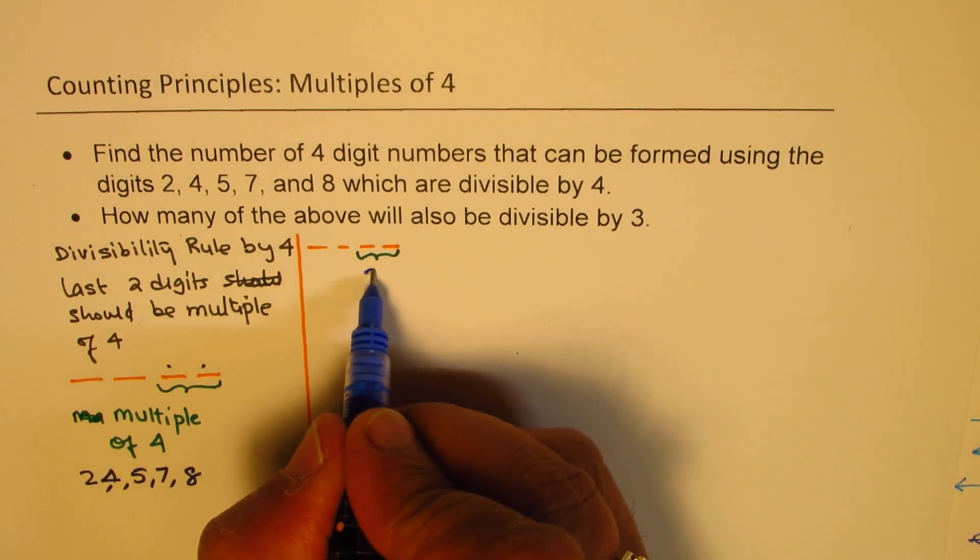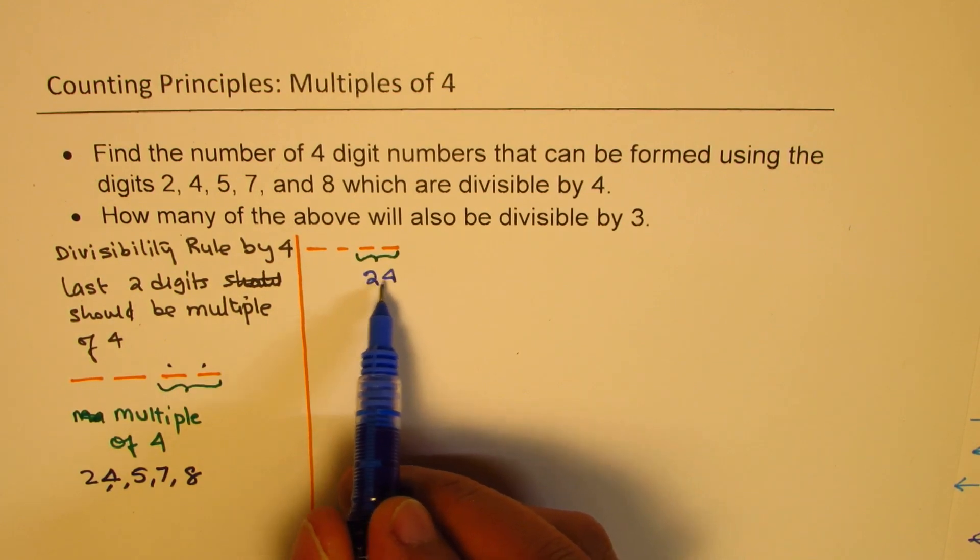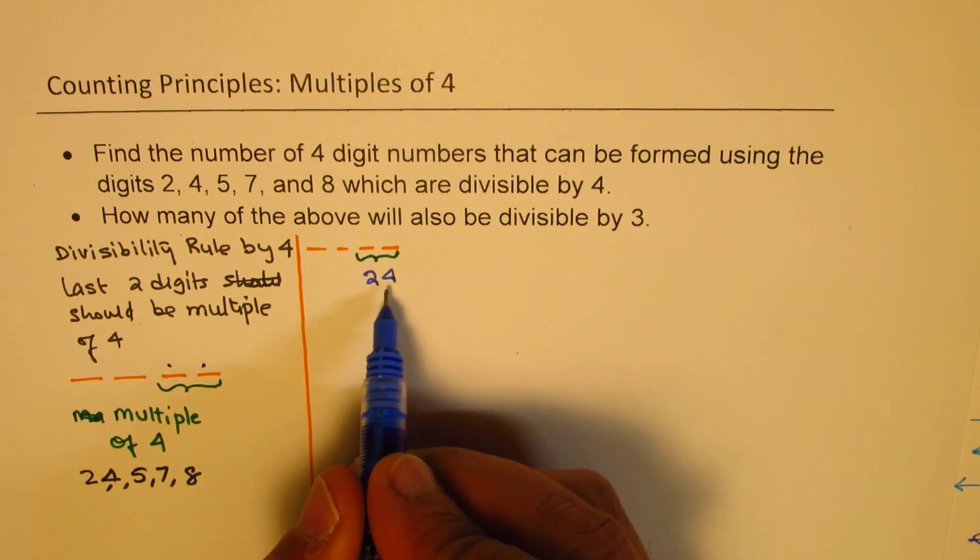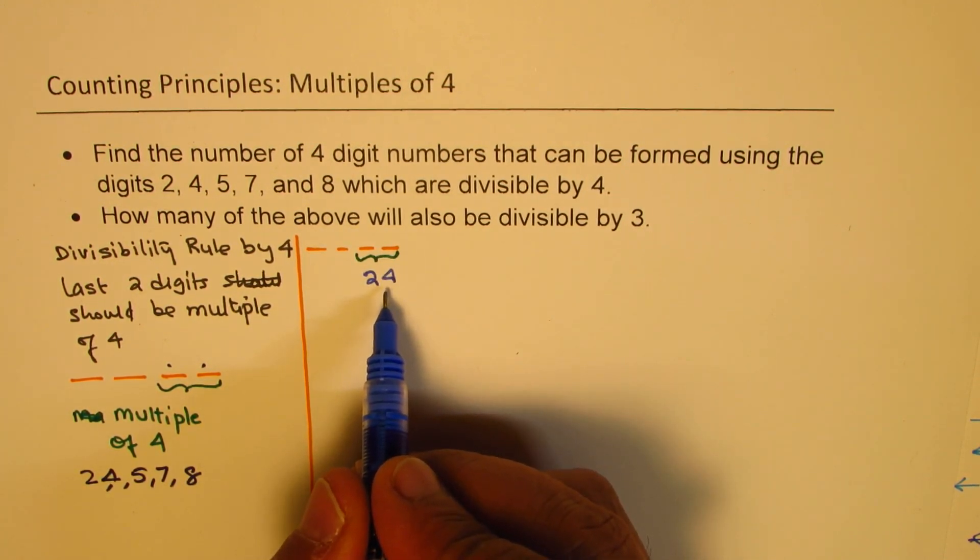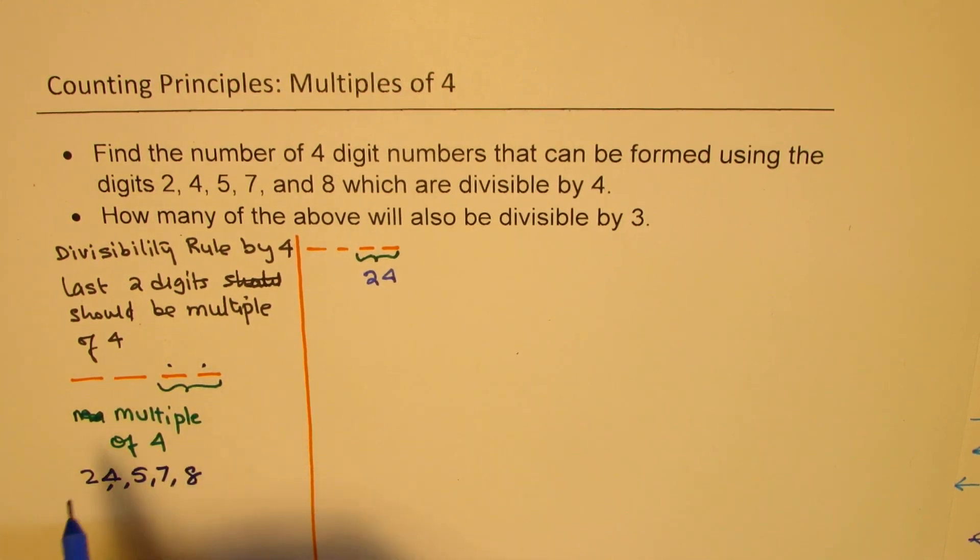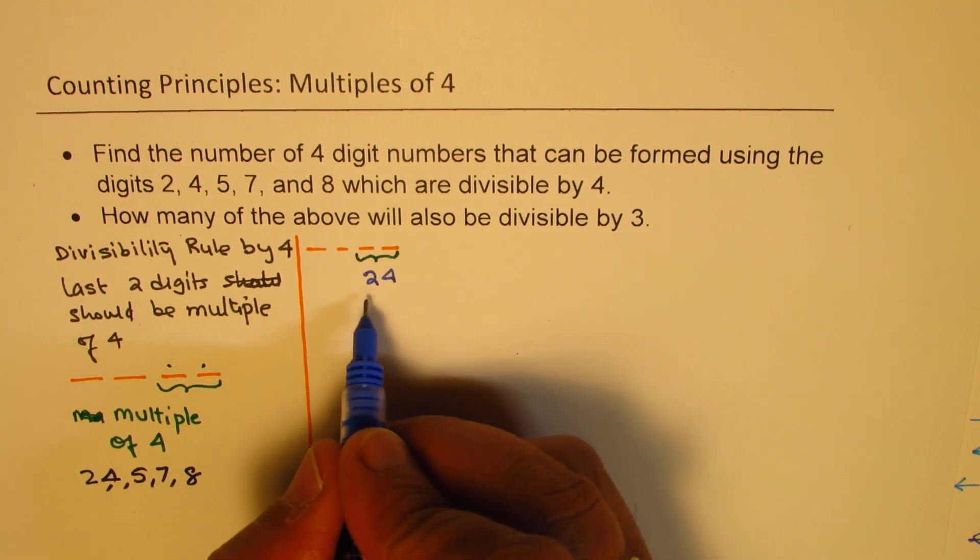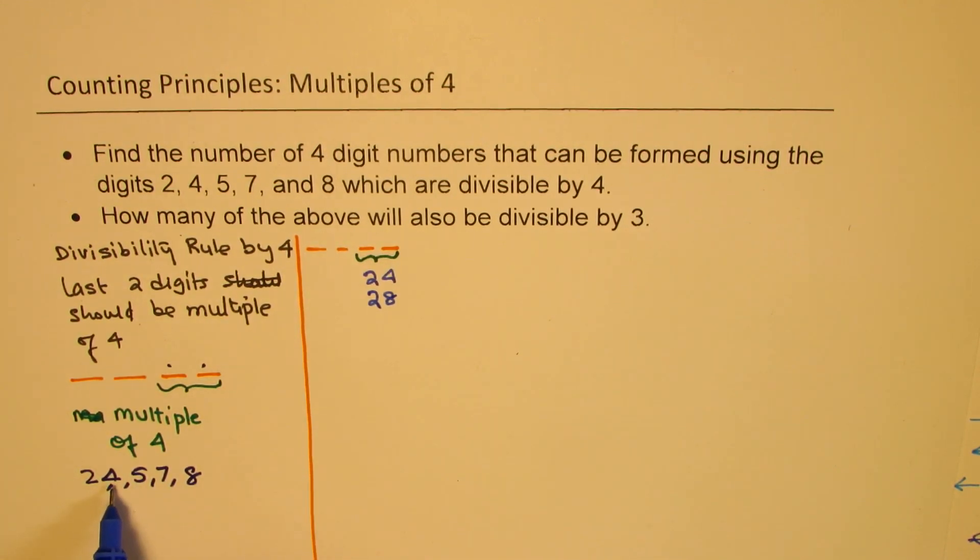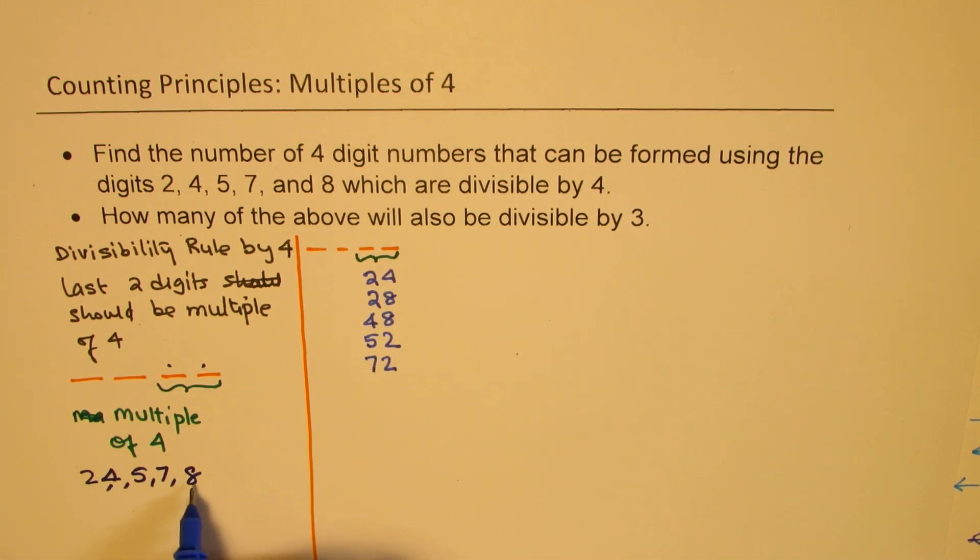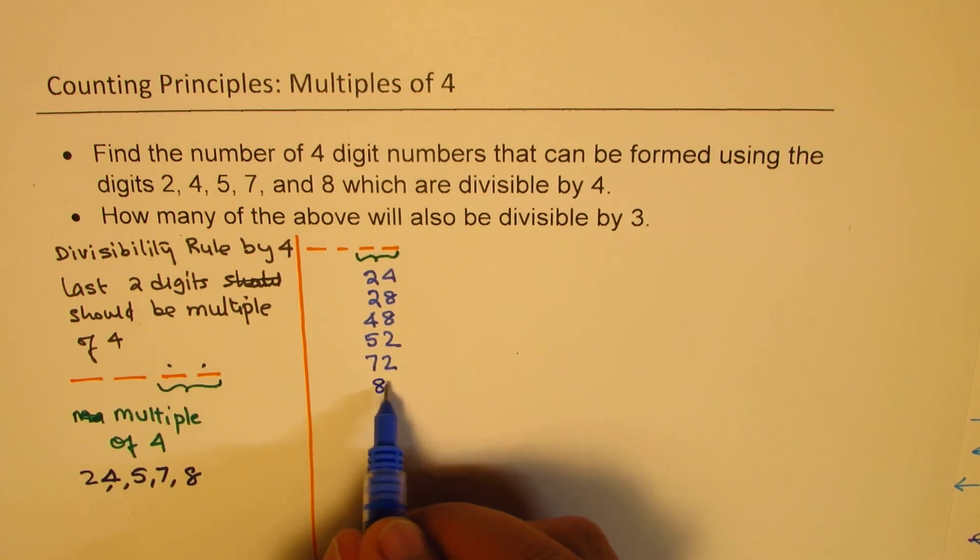One could be 24, for example. So 24 is a multiple of 4, 6 times 4 is 24. So if 24 is a multiple, 42 is also a multiple of 4? When you do, 42 is not a multiple of 4. 24 is. But with 2, we have 28 as a multiple. Then let's see multiples with 4. With 4, 42 is not a multiple, but 48 is a multiple. Now with 5, 52 is a multiple. 54 is not a multiple, but 58 is also not a multiple. Now with 7, 72 is a multiple of 4. 74 is not a multiple. 78 is also not a multiple of 4. Now let's look into 8. With 8, 84 is a multiple.